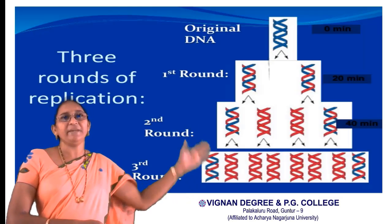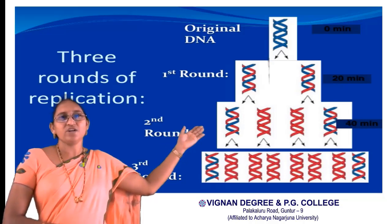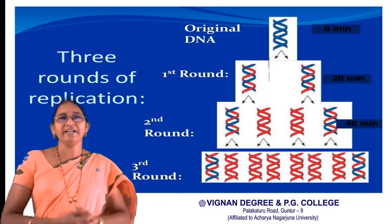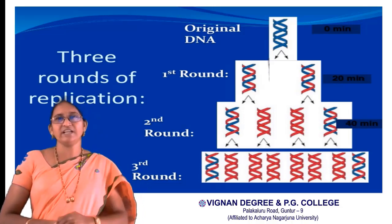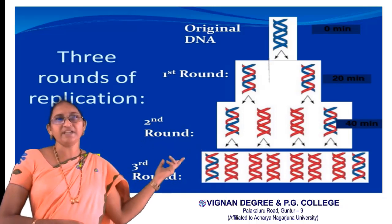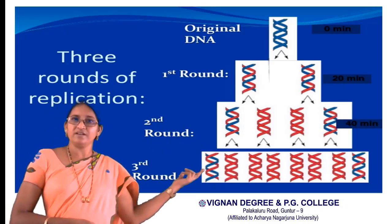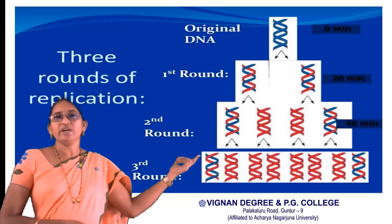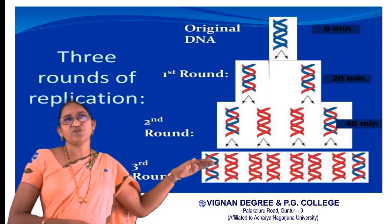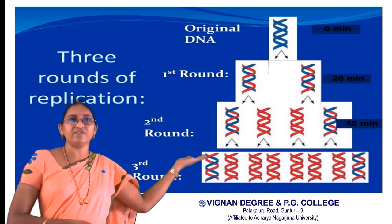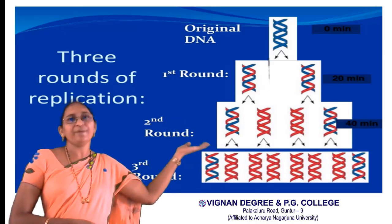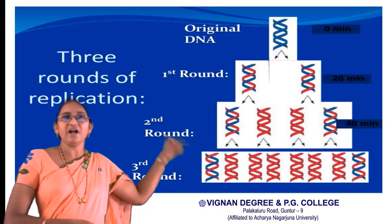In the first generation, one hybrid band was formed at the middle. Coming to the second round of replication at 40 minutes: the hybrid DNA molecules again underwent replication and produced four DNA molecules. Among these four, two DNAs are hybrids and two DNAs are lighter. In the density gradient centrifugation for the second round, the hybrid DNAs form a band at the middle of the tube, while the two lighter DNAs — containing only N-14 nitrogen — form a band at the top. So two bands are observed in the second round: one at the middle and one at the top.